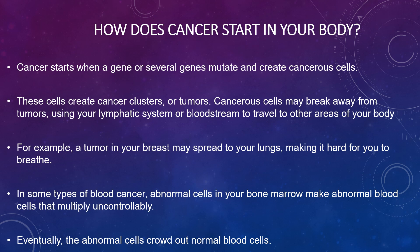How does cancer start in your body? Cancer starts when a gene or several genes mutate and create cancerous cells. These cells can create cancer clusters or tumours. Cancerous cells can then break away from tumours, using your lymphatic system or bloodstream to travel to other areas of your body. For example, a tumour in your breast may spread to your lungs, making it hard for you to breathe.